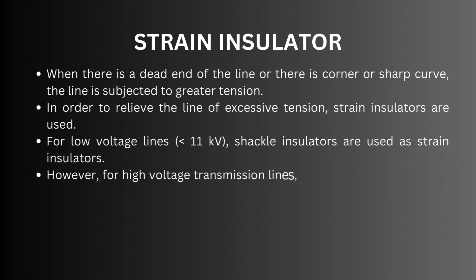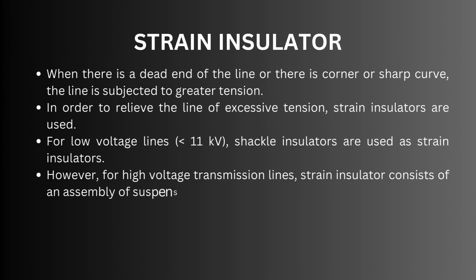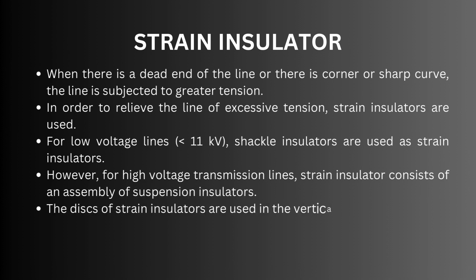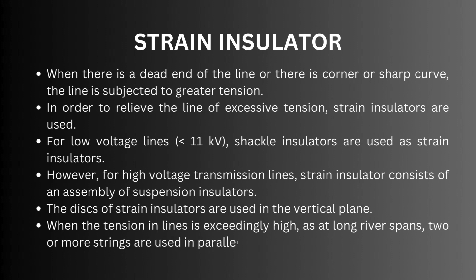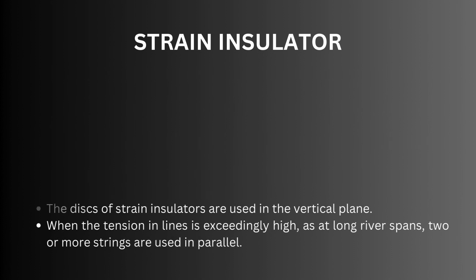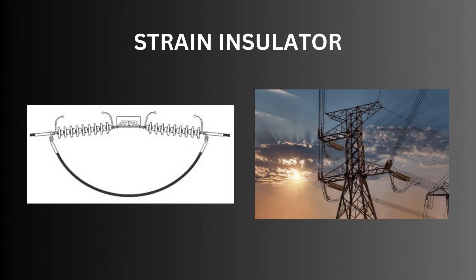However, for high voltage transmission lines, strain insulators consist of an assembly of suspension insulators. The discs of strain insulators are used in the vertical plane. When the tension in lines is exceedingly high, as at long river spans, two or more strings are used in parallel. The illustration depicts a strain type insulator.